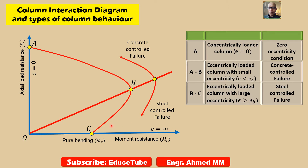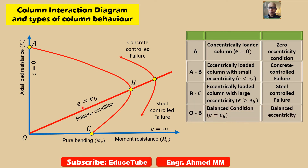In between these two situations — that is, this threshold — it is represented by the balanced condition. It is characterized by balanced eccentricity, E equal to EB, and it shows on line OB. Let's move to the next slide to see more details.